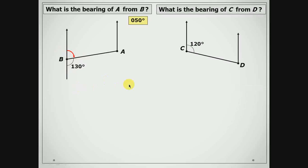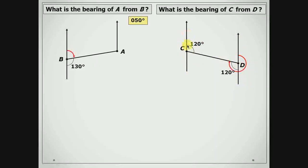What is the bearing of C from D? This time we are leaving from D. From our north line, we are measuring in a clockwise direction. Having extended our north lines, you should see the alternate angles being formed. Since alternate angles are equal, these two angles are equal to 120. And since angles on a straight line measure 180, the actual bearing of C from D would be 180 plus 120, which is 300 degrees.